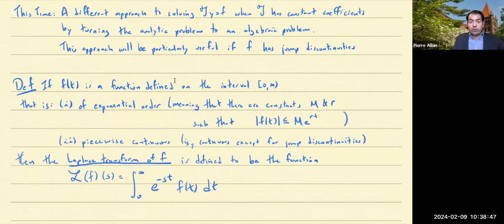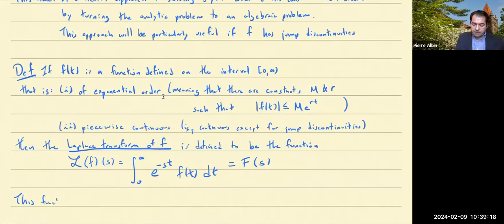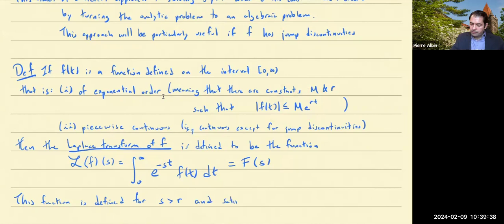It's common to talk about pairs where you have your initial function little f and then the Laplace transform is capital F. We'll use both notations — both the curly L of little f and the capital F. With the two assumptions we've made, this function is defined for S larger than R, where R is the R in the exponential bound, and satisfies that the limit as S goes to infinity of capital F of S equals 0.